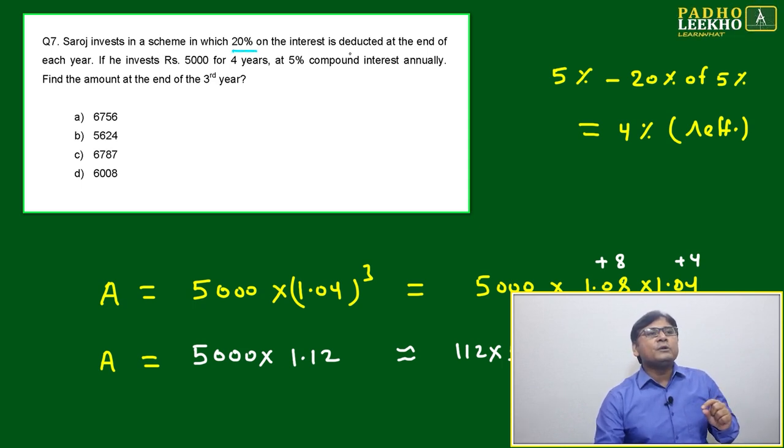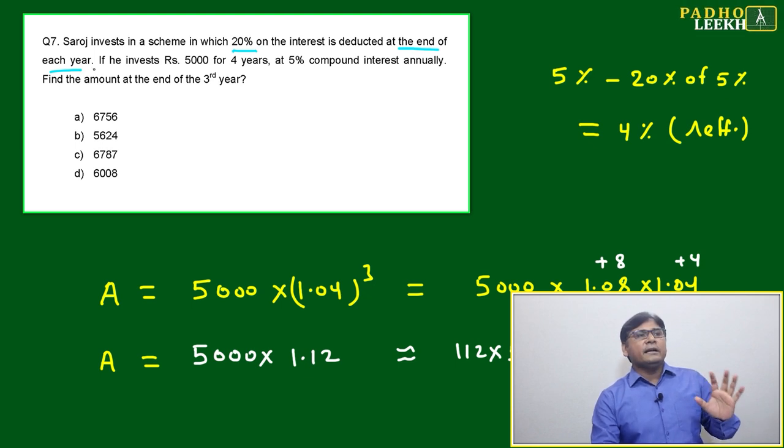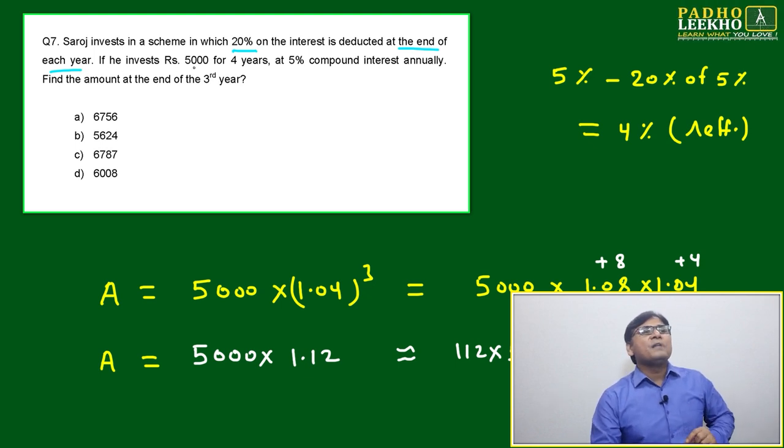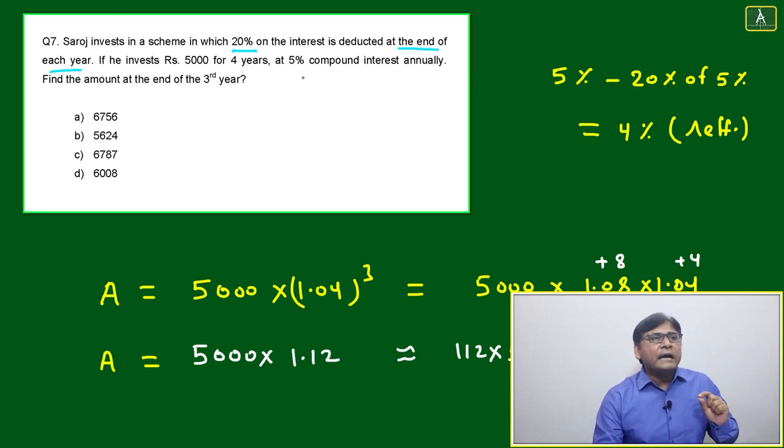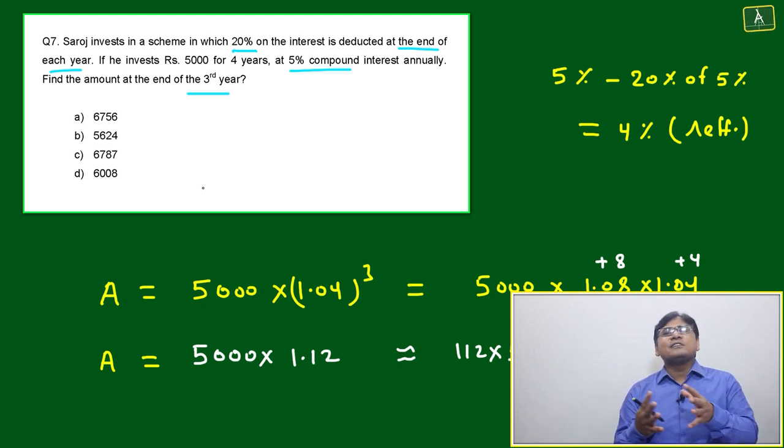Saros invests in a scheme in which 20% of the interest is deducted at the end of each year. If he invests Rs. 5000 for four years at 5% compound interest annually, find the amount at the end of third year.